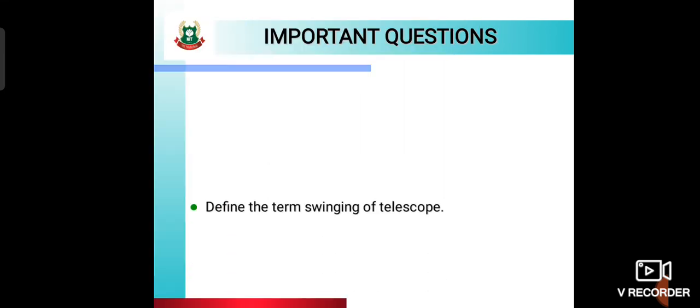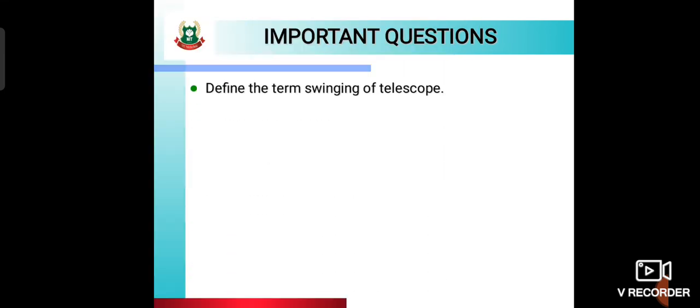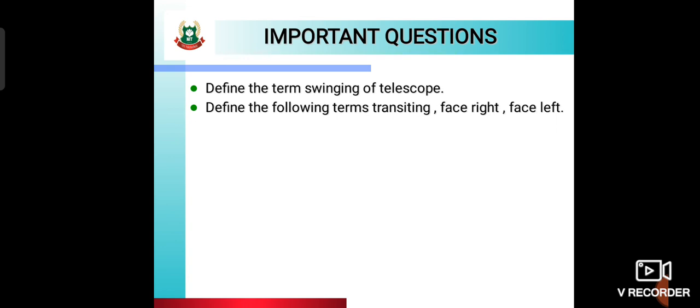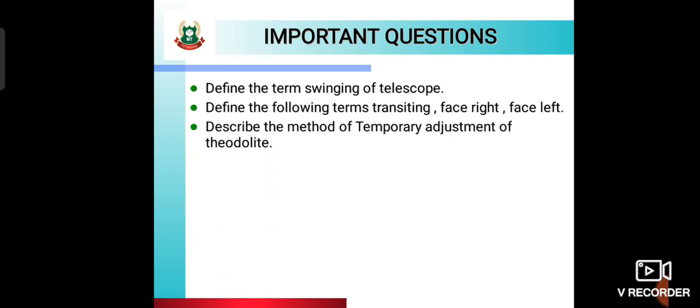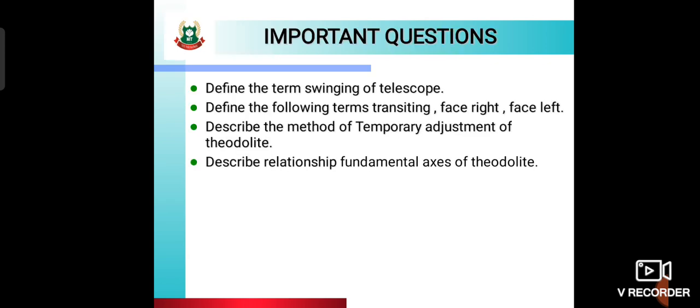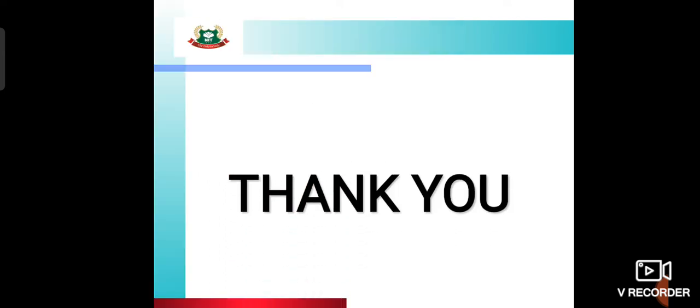Important questions for today's video: Define the term 'swinging of telescope' — this is also your assignment. Define the following terms: transiting, face right, face left. Describe the method of temporary adjustment of theodolite. Describe the relationship between fundamental axes of theodolite. These four are important questions asked in MSBTE exams, and you need to solve them as an assignment. The next video will be based on different topics of theodolite surveying. Thank you.